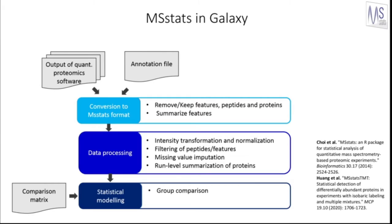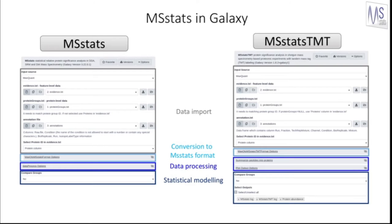Before the actual statistical comparison, MSstats converts the proteomics input file into a compatible format and allows for many data processing steps such as intensity normalization and log transformation, filtering of peptides and features, missing value imputation, and run-level summarization of proteins. Corresponding to the existing R packages, two separate MSstats tools were implemented in Galaxy: one tool is MSstats for label-free analysis and the other is MSstats TMT for isobaric labeling-based methods.